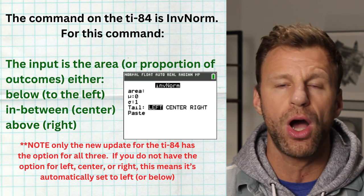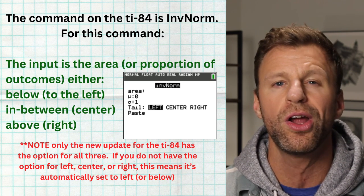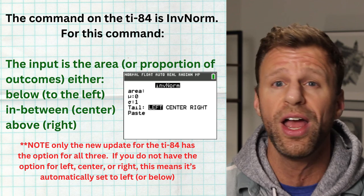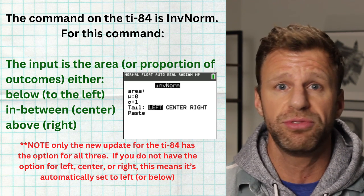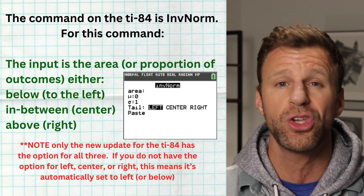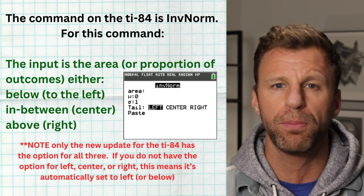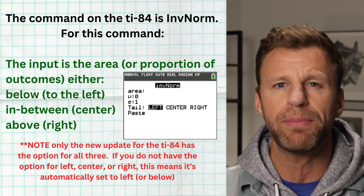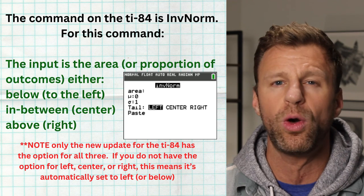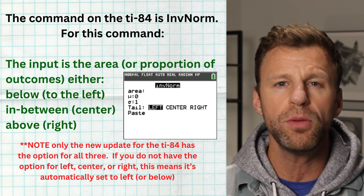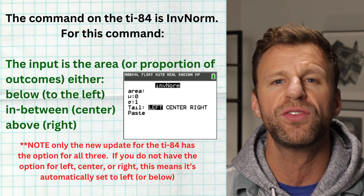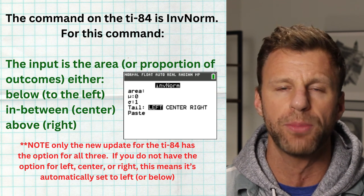If you don't have the newest update on your TI-84 calculator, you do not have the options for left, center, and right. If you hit invNorm and don't see those options, it means your calculator is automatically defaulting to left — so it can only look at the left or bottom proportion. Don't worry too much, because if you're talking about the top 20%, you should know that simultaneously means the bottom 80% of that model. Hopefully most of you have the newest update with the left, center, and right option under invNorm.